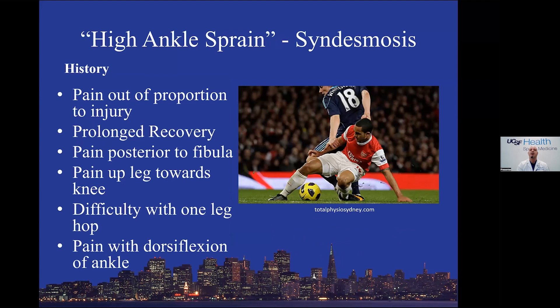High ankle sprains involve a different mechanism — dorsiflexion and eversion injury affecting the anterior inferior tib-fib ligament, posterior inferior tib-fib ligament, and interosseous ligament. Signs include pain out of proportion to injury, prolonged recovery, pain up the posterior fibula toward the knee, pain above the ankle joint, difficulty with single-leg hop, and pain with ankle dorsiflexion.